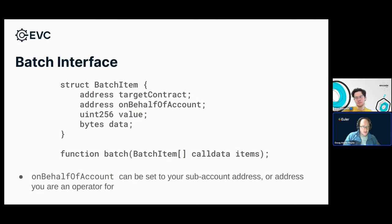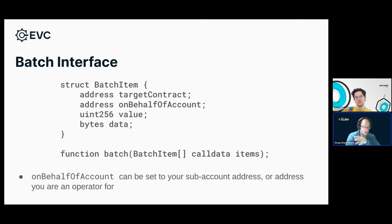Let's discuss how to actually use batches. This is the interface for a batch — there's this one function, batch. It returns nothing and takes an array of items. Each item is a batch item struct with different parameters — each one is kind of like an entry in a multicall because you're basically doing a low-level call on each one of these target contracts. Value is the amount of ether you want to send to this contract, and data is the calldata you're passing to that call. The batch function will execute each one of those in sequence.